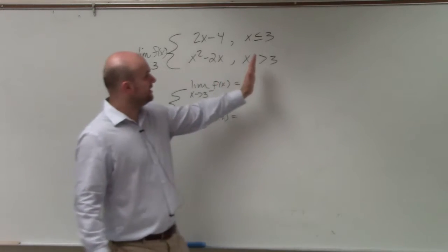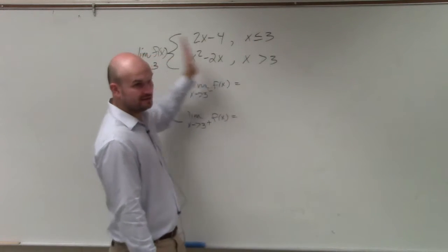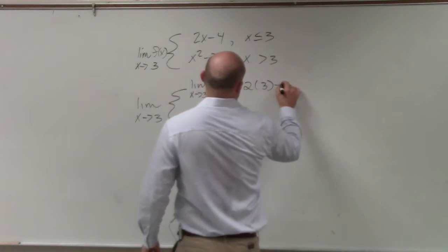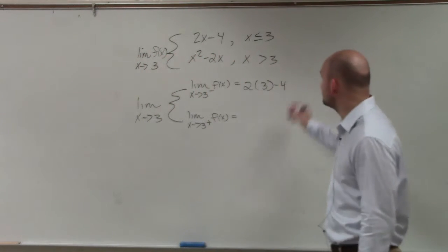So if we look at 3, values that are less than 3 are going to the left. So the left-hand limit, we're going to use this function. 2 times 3 minus 4. 2 times 3 is 6, minus 4 is 2.